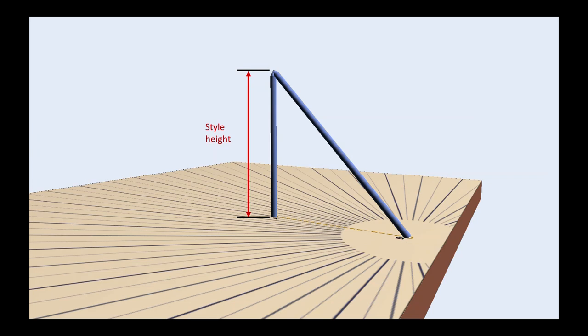When designing a sundial, the most important dimension is the height of the gnomon. It is what determines the scale of the layout, independently from the size of the plate.